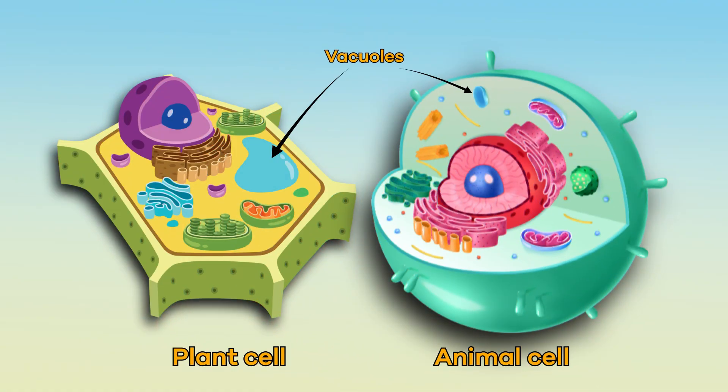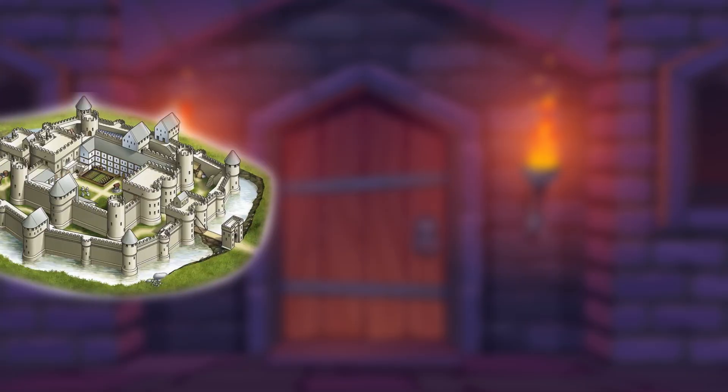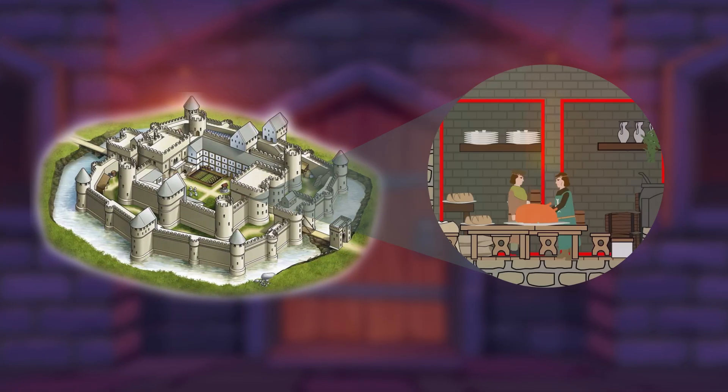Then there are vacuoles, which serve as nutrient storage, just like a castle pantry.